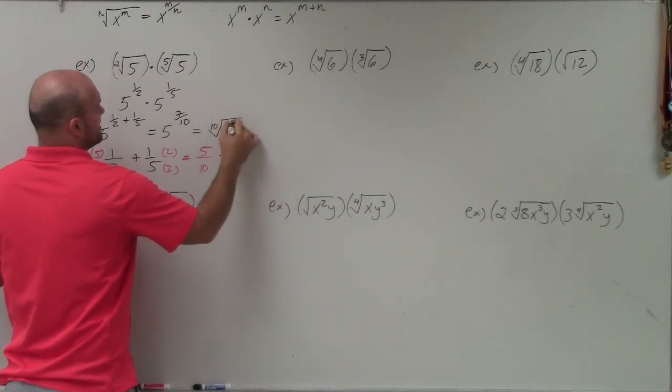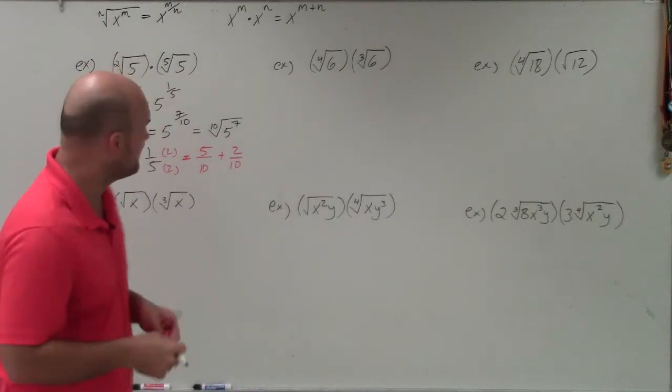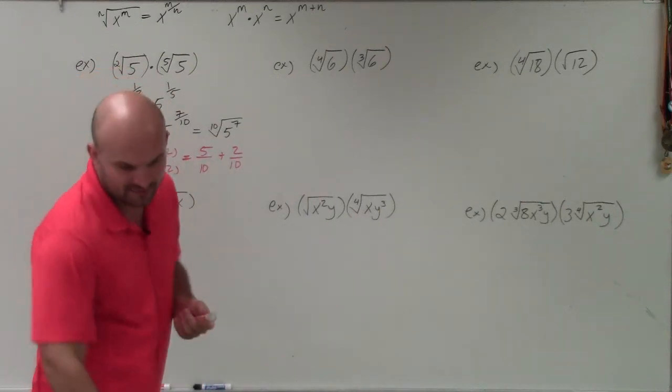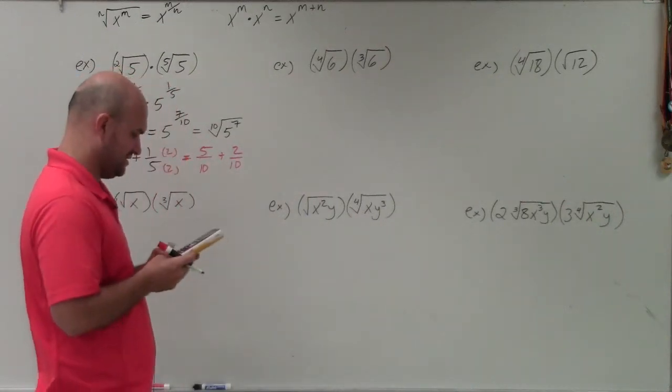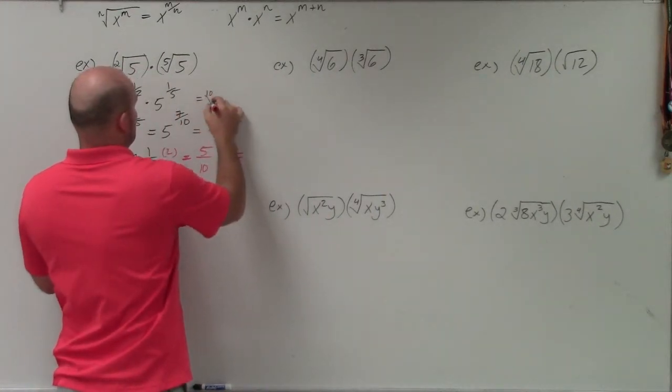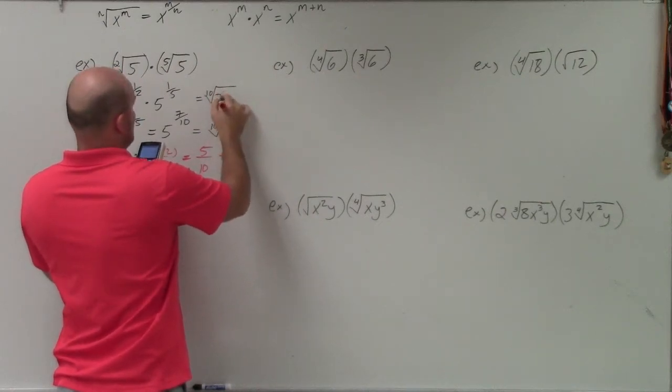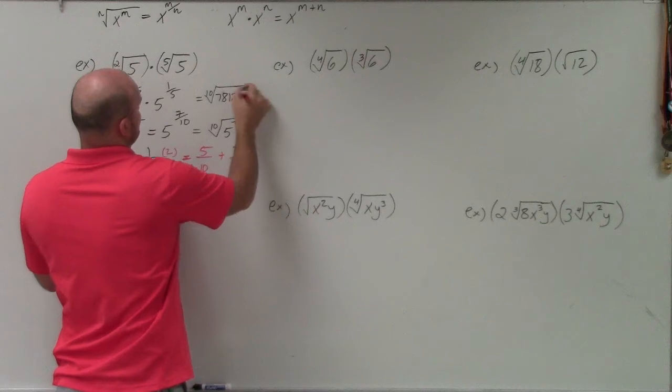The 10th root of 5 raised to the seventh power, which therefore, we could then obviously go ahead and simplify. I'm not going to simplify it, even though I do have a calculator. Let's just see what 5 to the seventh power would be. So we could also rewrite that as the 10th root of 78,125.